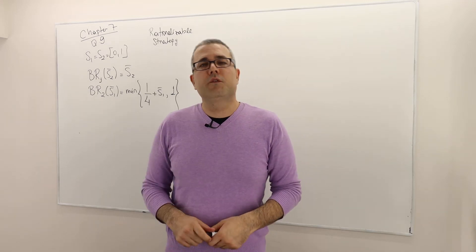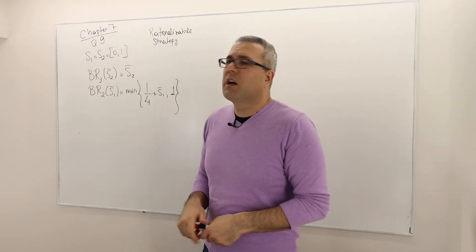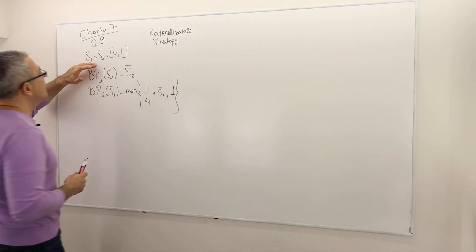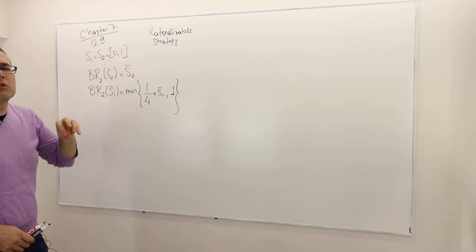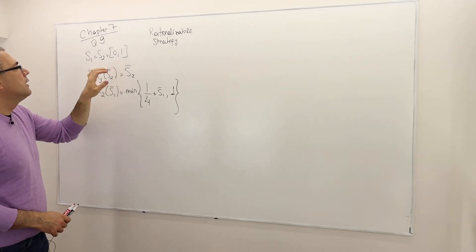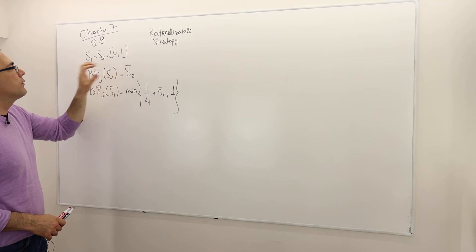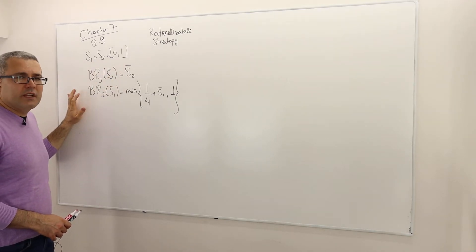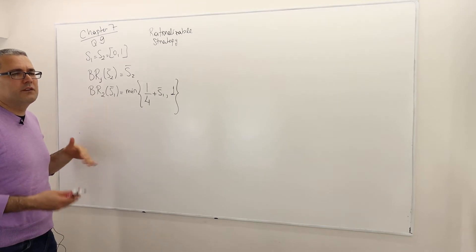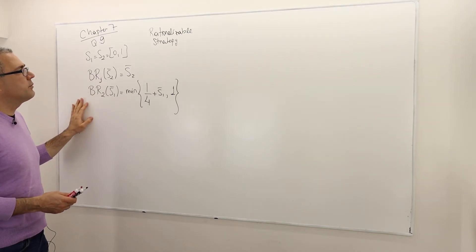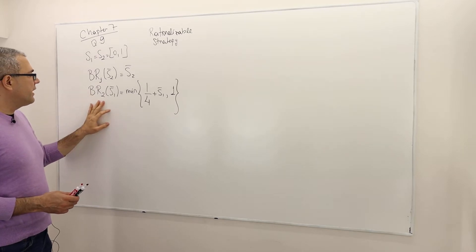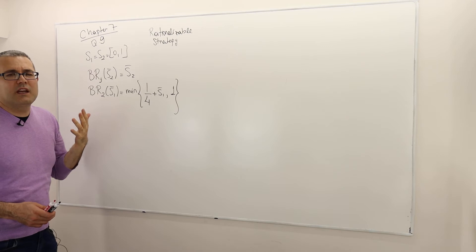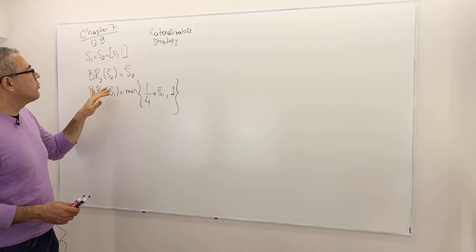I'm going to solve question number 9 in chapter 7. In this question there are two players, player 1 and 2. Their strategies come from the closed interval [0,1], so there are infinitely many strategies available for both players. The question doesn't give us the payoff functions but rather gives us the best response functions. The textbook uses this s1-bar, s2-bar notation.